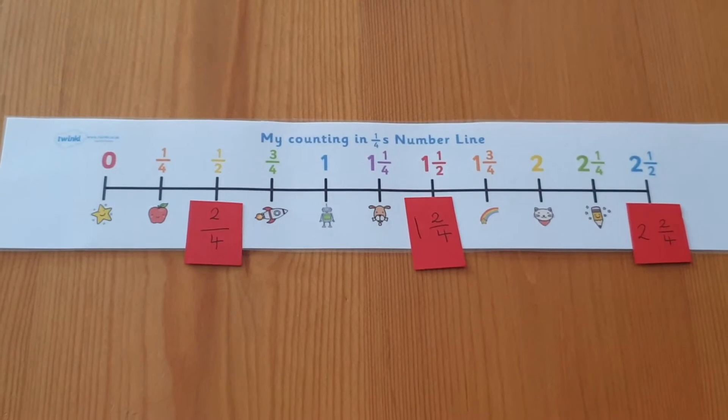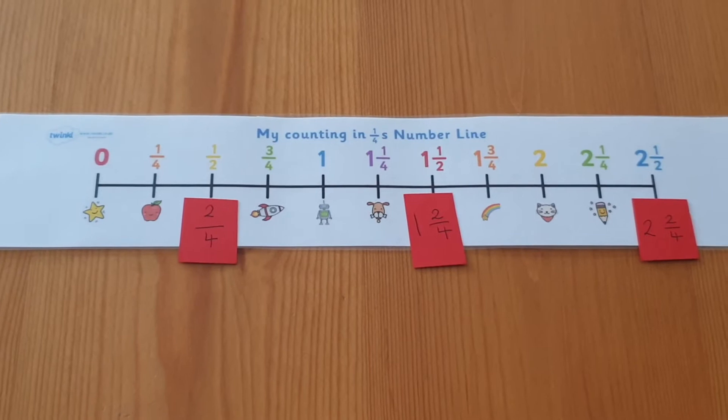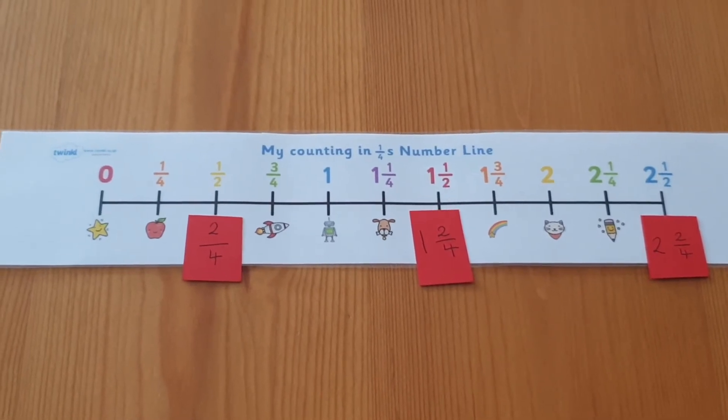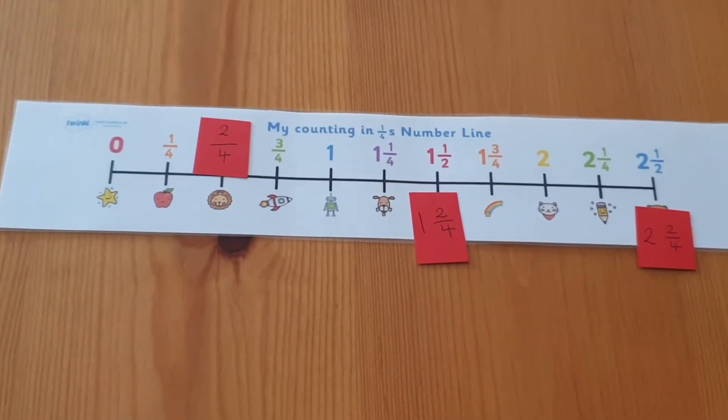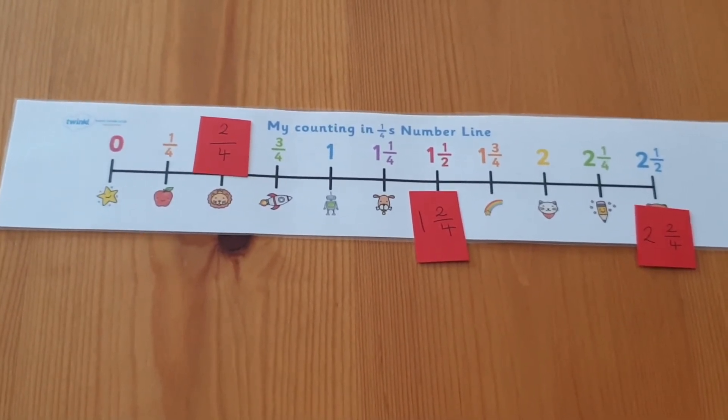By adding squares of paper with the equivalent fractions written on, we can see how the fraction number line can be used to show equivalent fractions. Equally, we could cover them up and ask the child to remember the equivalent fraction.